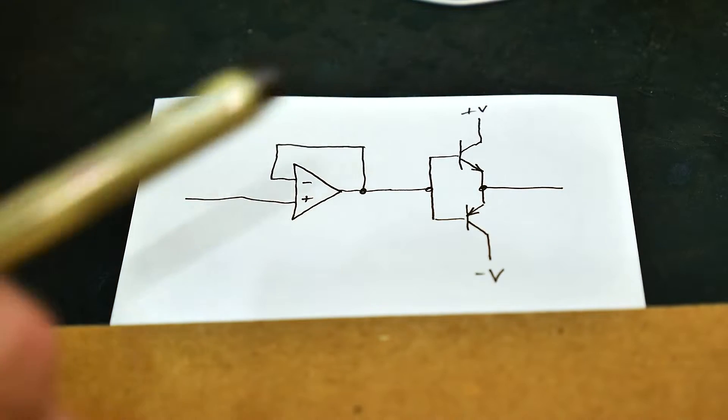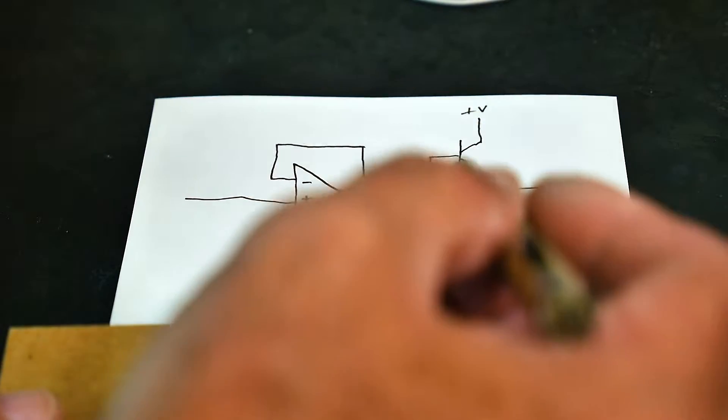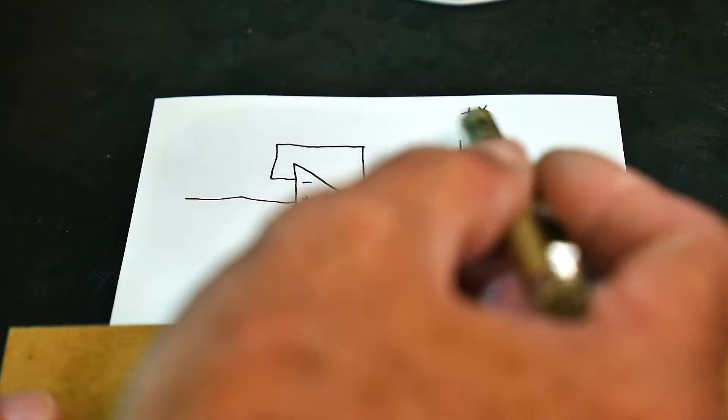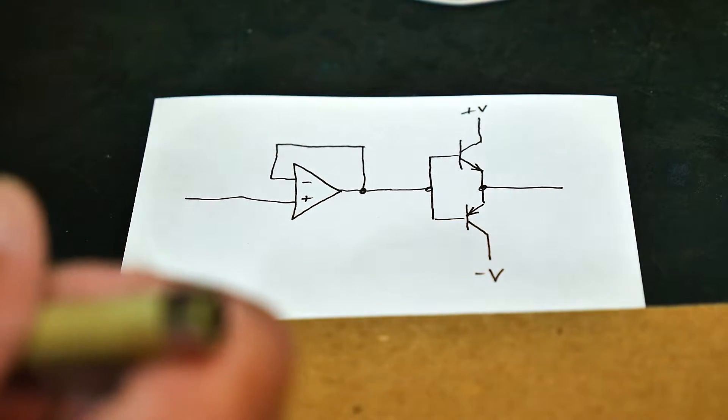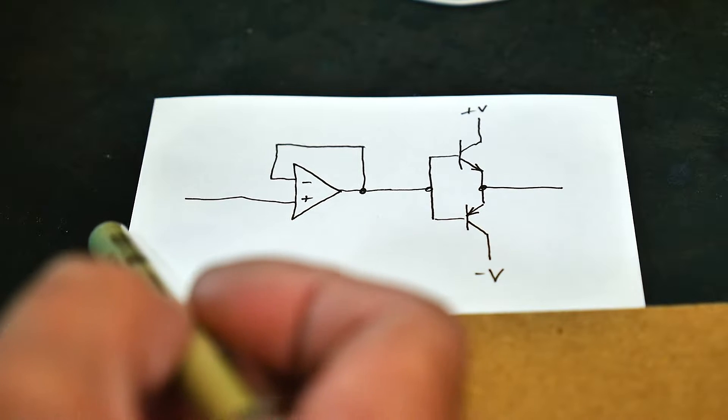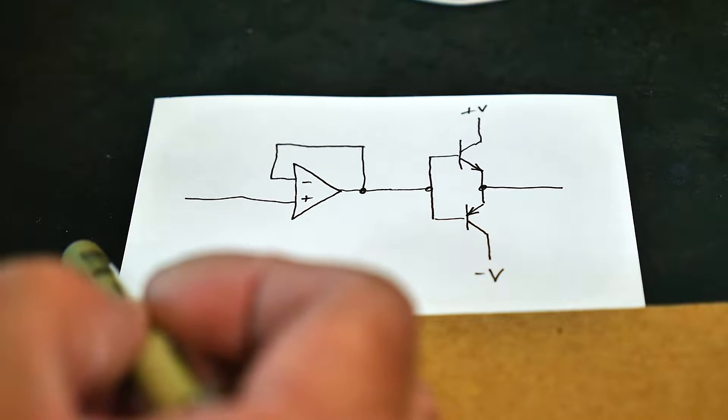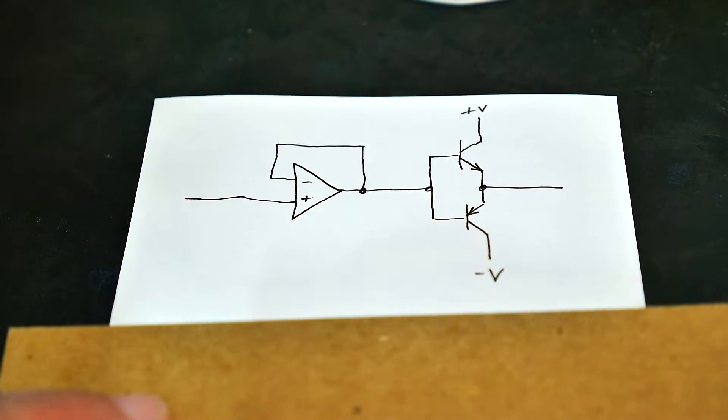But it might not have enough drive current. Let's say you're building a headphone amplifier or something and you just need a little bit extra current. You can put in an output section like this and that works great. We've seen this circuit in the op amp series but this might add some distortion to the signal and make the audio sound bad.